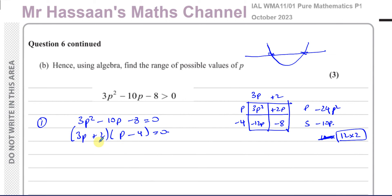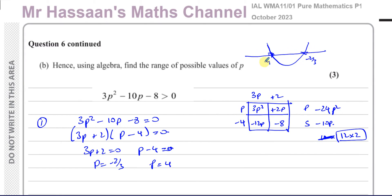Expanding (3p plus 2)(p minus 4): 3p² minus 12p plus 2p minus 8 — correct. So 3p plus 2 equals 0 gives p equals minus 2 thirds, and p minus 4 equals 0 gives p equals 4. Those are the two roots where the quadratic hits zero: p equals minus 2 thirds and p equals 4, with 4 being the larger value.